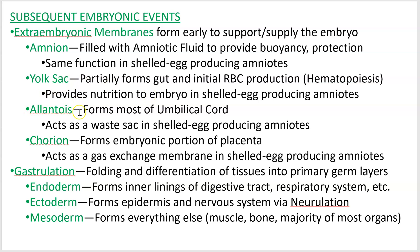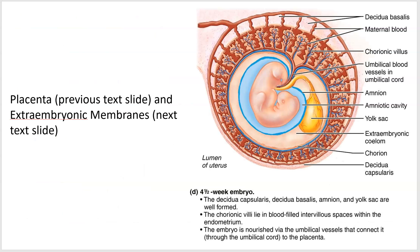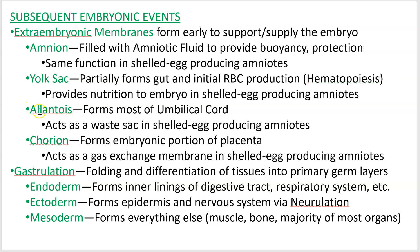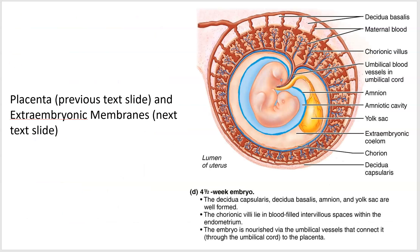The allantois — that's the actual pronunciation, though I sometimes say allantois — forms most of the umbilical cord. So if you wanted to identify where it was, it's right here. Most of that structure and the blood vessels that occupy it are formed from that membrane. Now, in a shelled-egg-producing amniote — amniote refers to anyone that has an amnion, which includes us — in a chicken, it acts as a waste sack, not the umbilical cord.